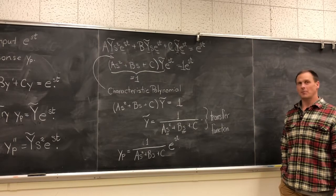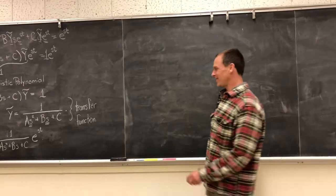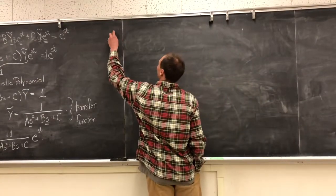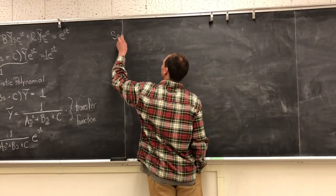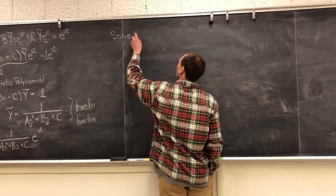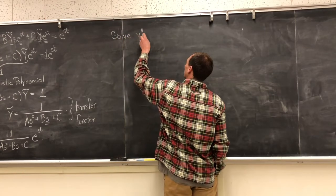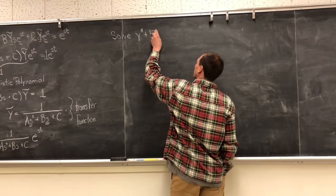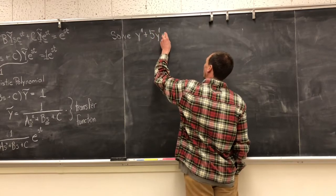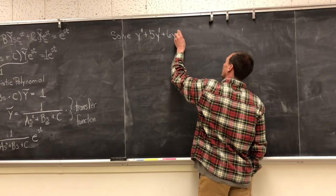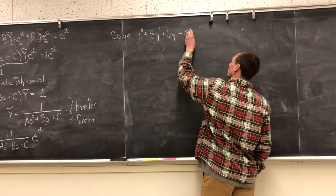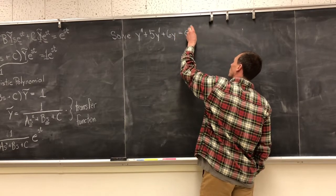So let's pause, let's stop there. All right, let's try this. So this is an example from our book. It says solve y'' + 5y' + 6y = e^(4t).